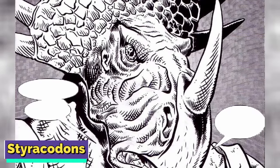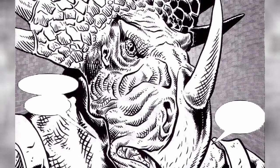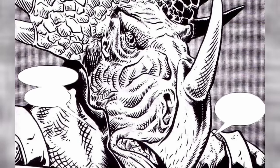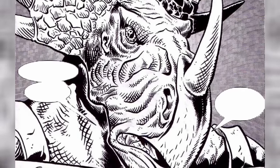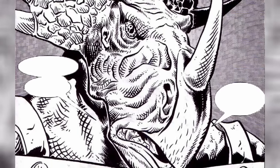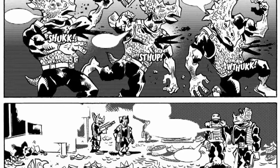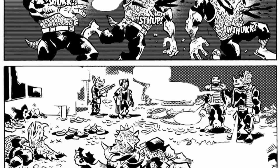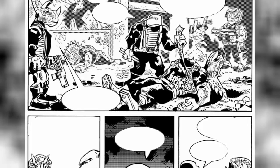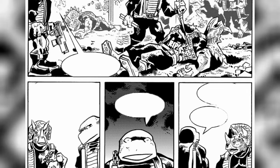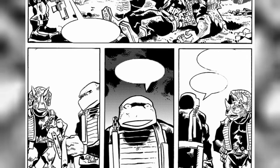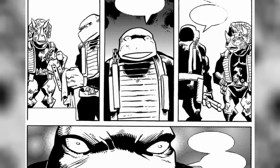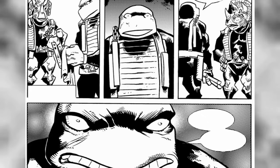Styrocodons: Appearing in the Mirage comics, Styrocodons were a race of aliens much like Triceratons, in the sense that they resembled humanoid Styricosauruses. Also known as Styroces, this species originated from the planet Nurgostu and had quite a violent history with the Triceratons. They were ruled by a governing body known as the Styrocodon Imperium, and they often allied with the Protoceratons in their fight against the Triceratons. Donatello once discovered that these two species originated from diverging evolutionary lines, but essentially from the same base species. The two most commonly appearing Styrocodons were Cerulicus and Celis.